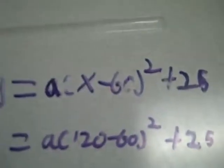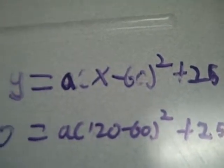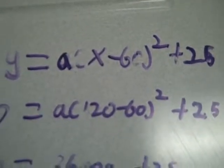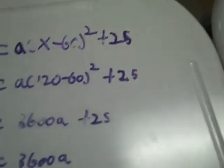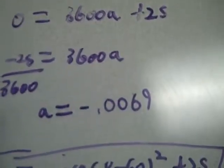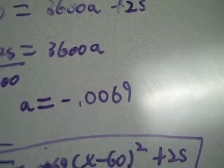I'm Isak, and then for the equation it was y equals a times x minus 60 plus 25, and then we found that the a value was negative .0069.